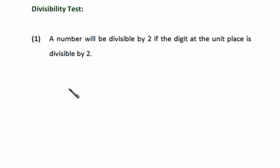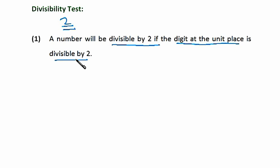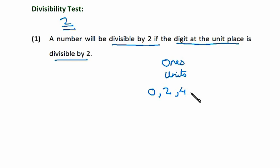Now friends, we will first begin with a divisibility test of the number 2. A number will be divisible by 2 if the digit at the unit's place is divisible by 2. The digit at the unit's place — ones are the units — should be divisible by 2, which means it could either be 0, 2, 4, 6, or 8. If the unit's place has any of these 5 numbers, then you don't need to divide and check — the whole number is divisible by 2.